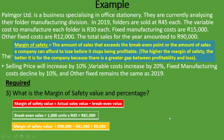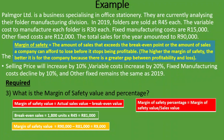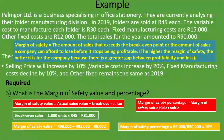Now for the margin of safety percentage: that equals the margin of safety value divided by the sales value. We have the margin of safety value of R9,000 divided by the sales value of R90,000, giving us a margin of safety percentage of 10%. That means from our sales, we only have wiggle room of 10% — if our sales fall by more than 10%, we will be making a loss.